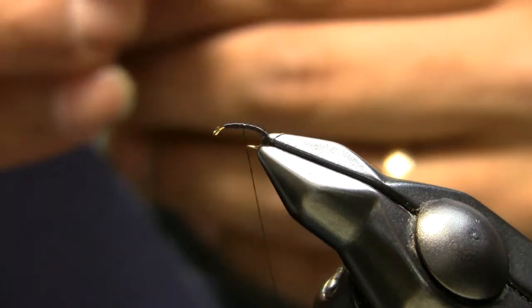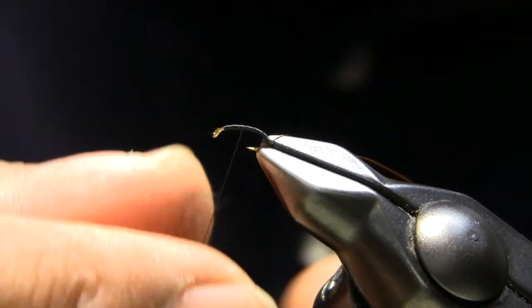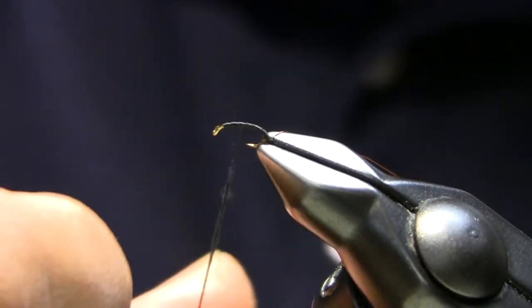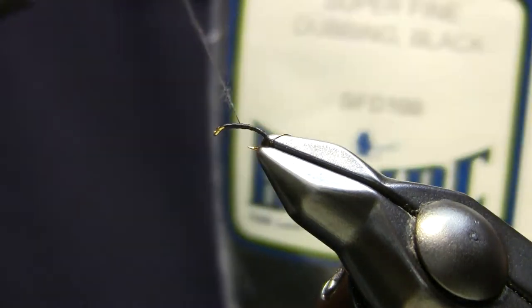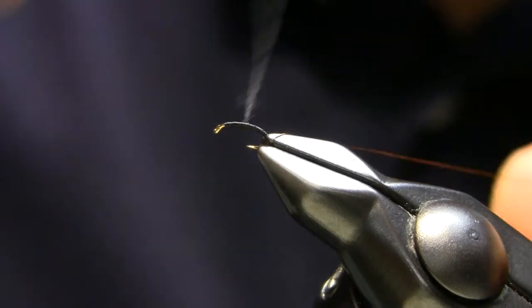So add a little bit of black dubbing to it. And I'm using the black superfine dubbing just to make that thin body.